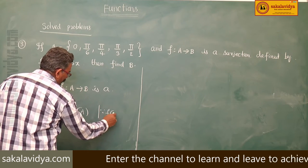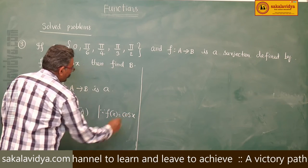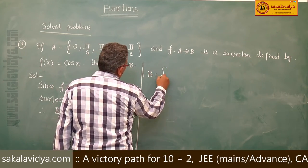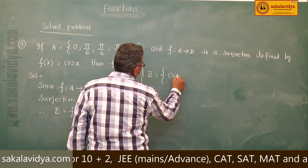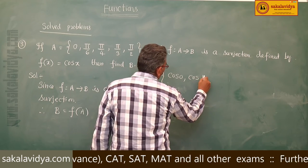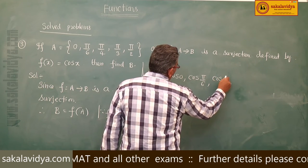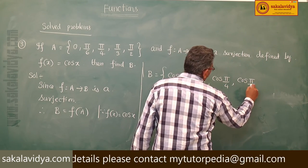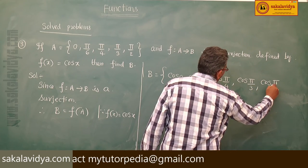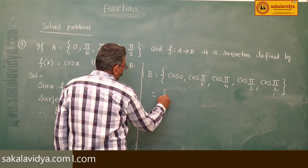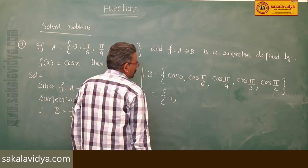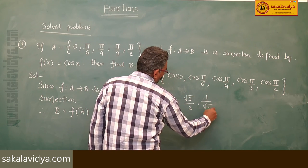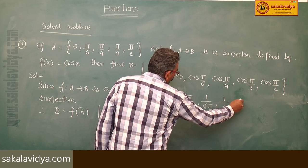Since f(x) = cos x, we have B = {cos 0, cos(π/6), cos(π/4), cos(π/3), cos(π/2)} = {1, √3/2, 1/√2, 1/2, 0}.